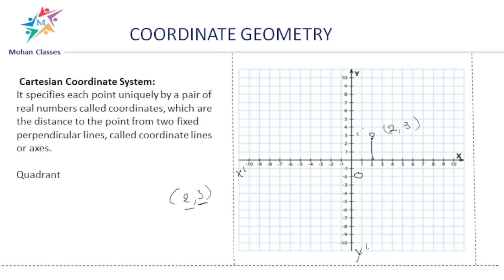In this plane, we represent the point (2, 3). The perpendicular distance from the point to the x-axis is called the y-coordinate, and the distance from the y-axis to the point is called the x-coordinate. So x equals 2 units and y equals 3 units — that is how we represent (2, 3).